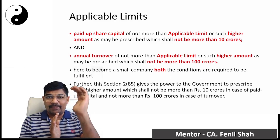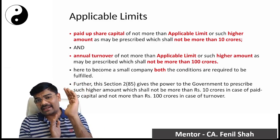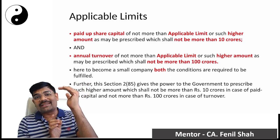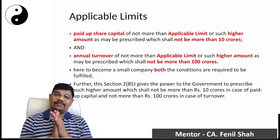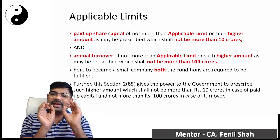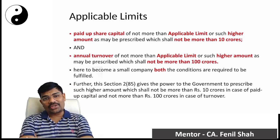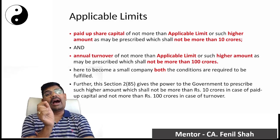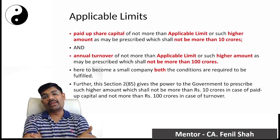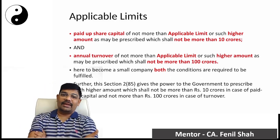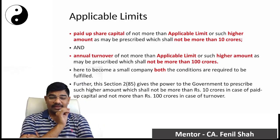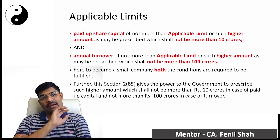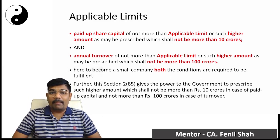So if the government wants to increase the paid-up capital limit, it can go up to 10 crores. And if the government wants to increase the turnover limit, it can go up to 100 crores. Section 2, Clause 85 gives the central government the power to prescribe higher limits. So the limits keep increasing as the government exercises this power, bringing more companies within the scope of small companies.